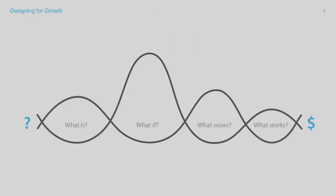We described one view of the design thinking process as being about four questions: What is, that describes current reality; What if, that envisions a new future; What wows, that surfaces the assumptions behind an idea and creates a low-fidelity prototype for stakeholders to interact with; and finally, What works, that conducts small experiments in the marketplace. These four questions, we argued, allow us to generate and experiment with ideas.